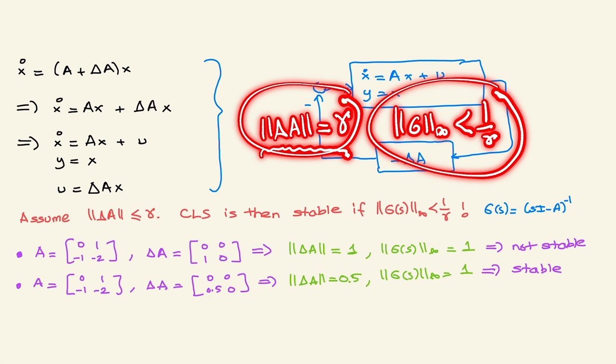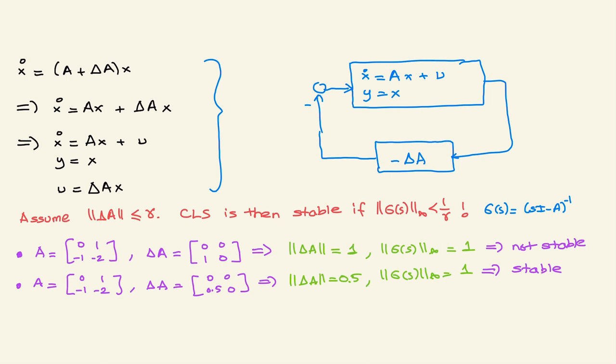I found the small gain theorem useful in my research over many years. As mentioned, it provides a sufficient condition, so it comes with some conservatism. For linear systems, matrix-based approaches can yield less conservative results. But it is a neat result and good to know. Leave a comment if you have questions, and take care.